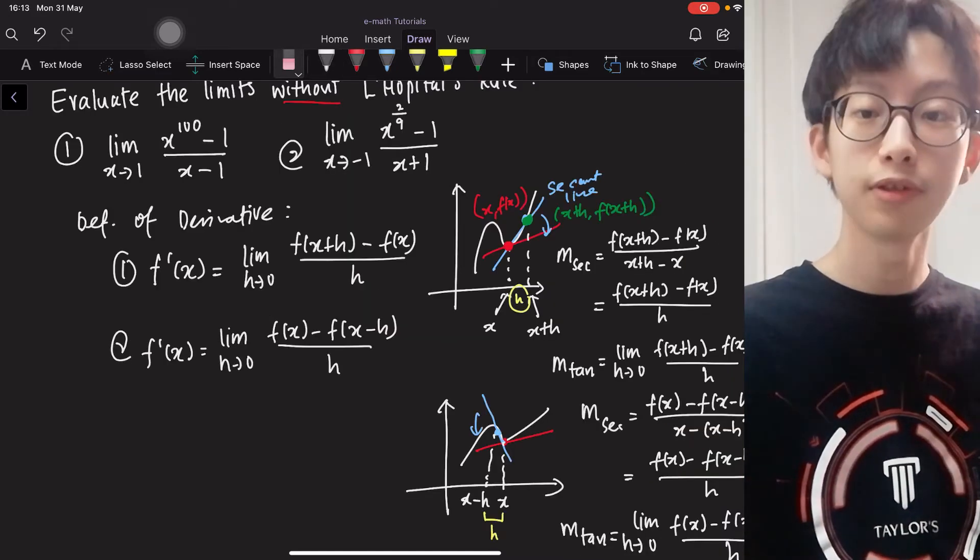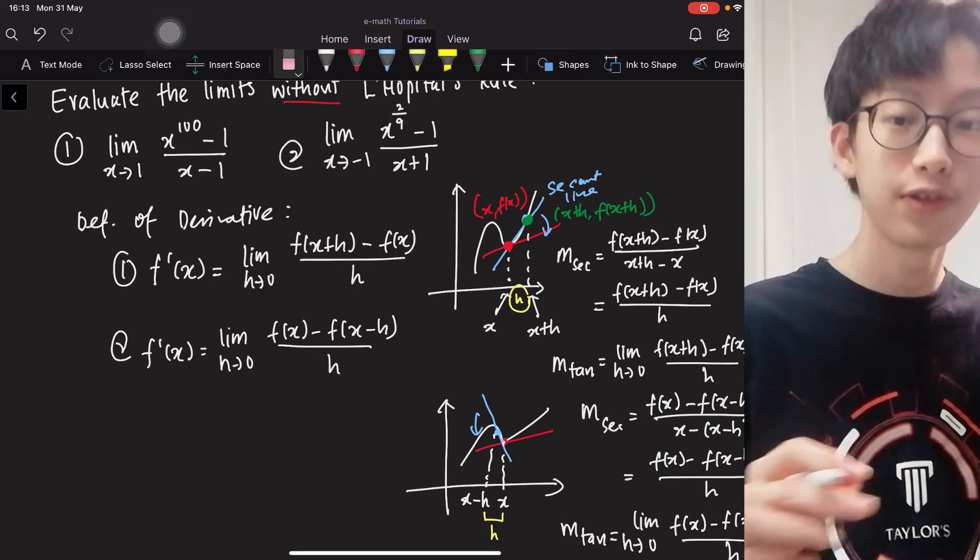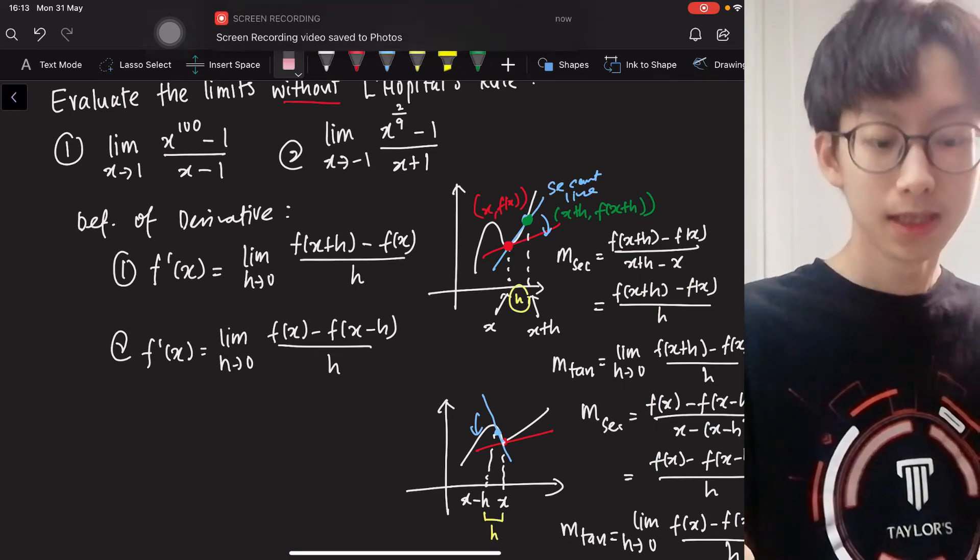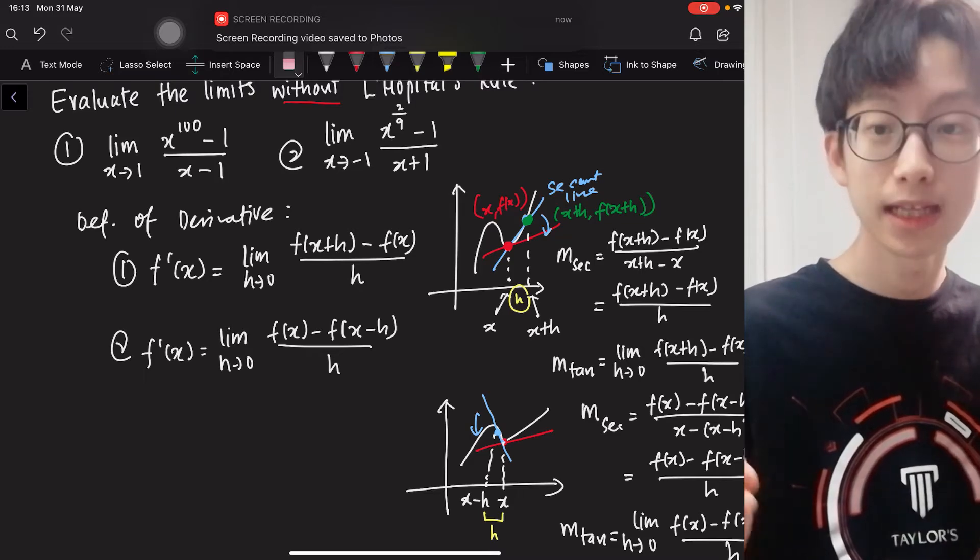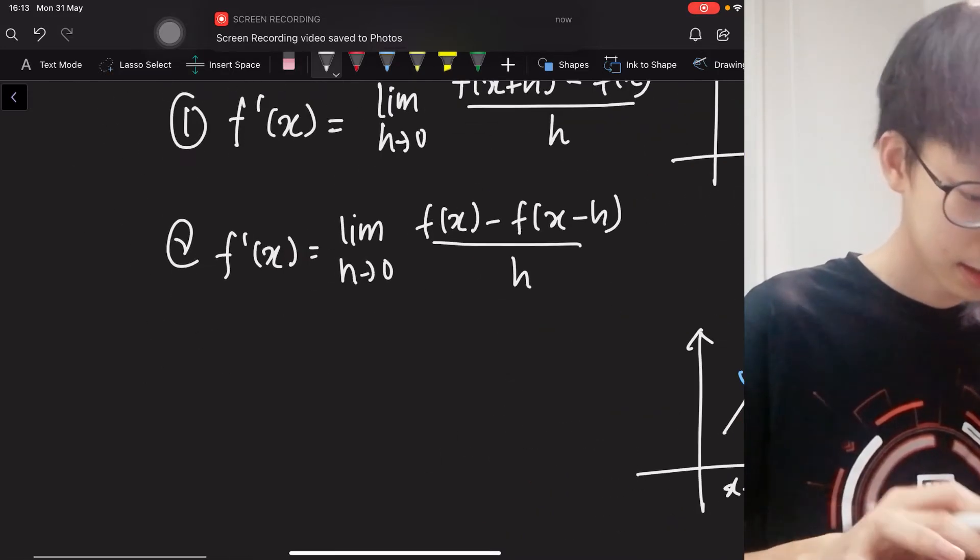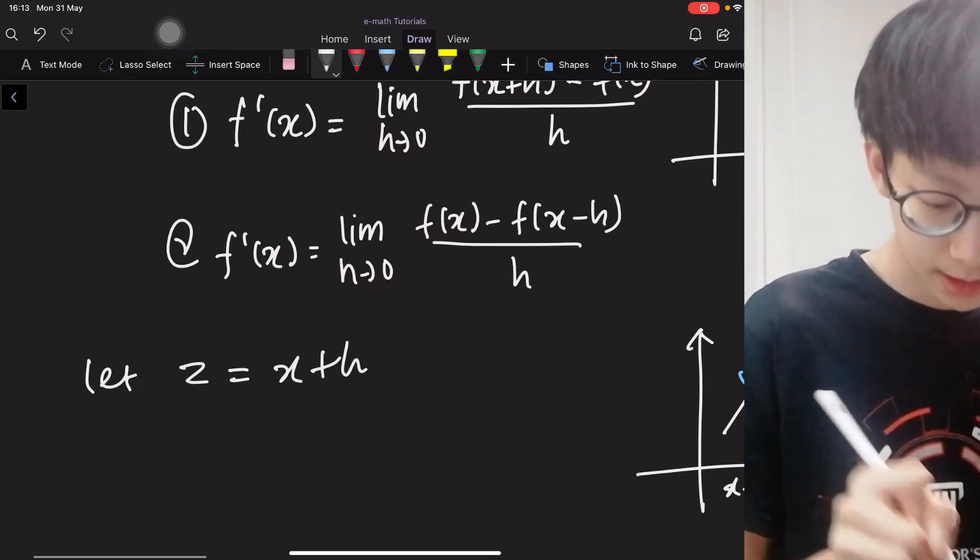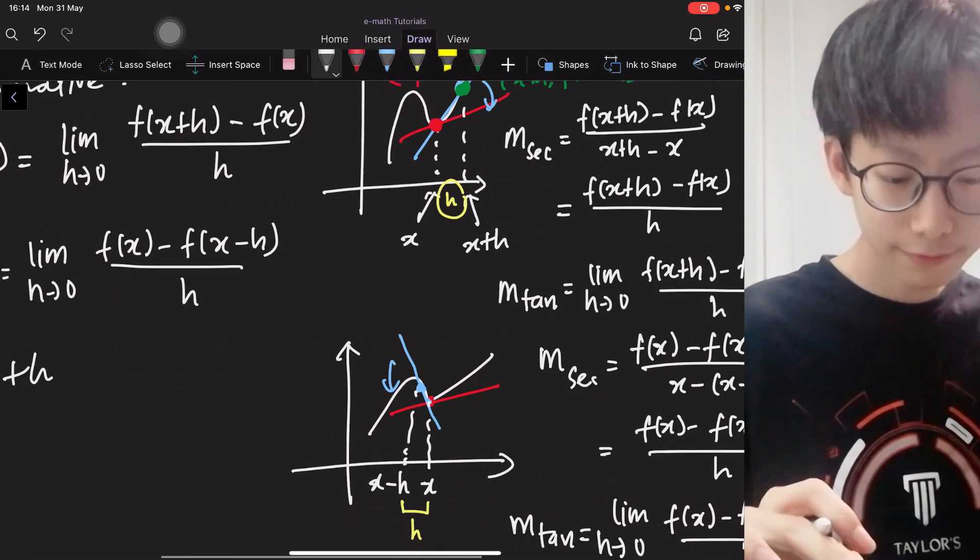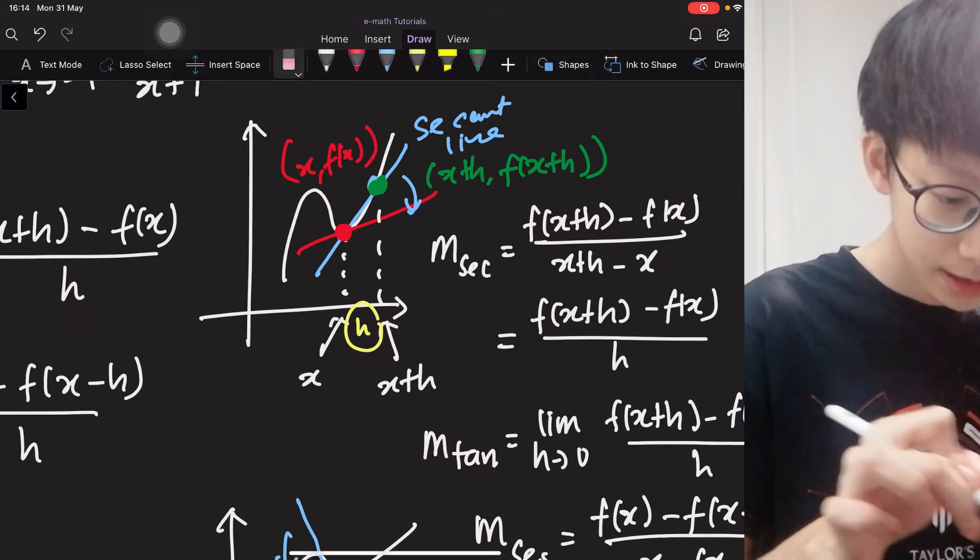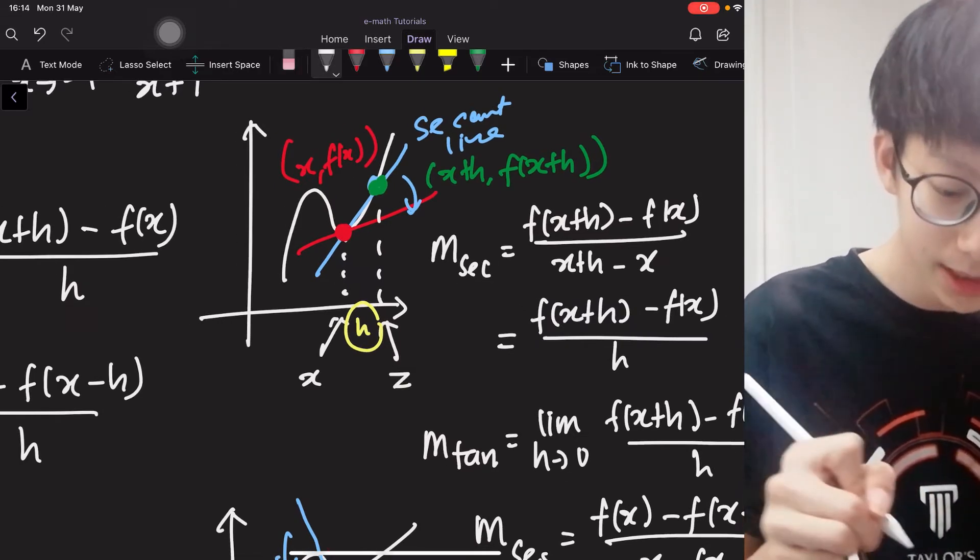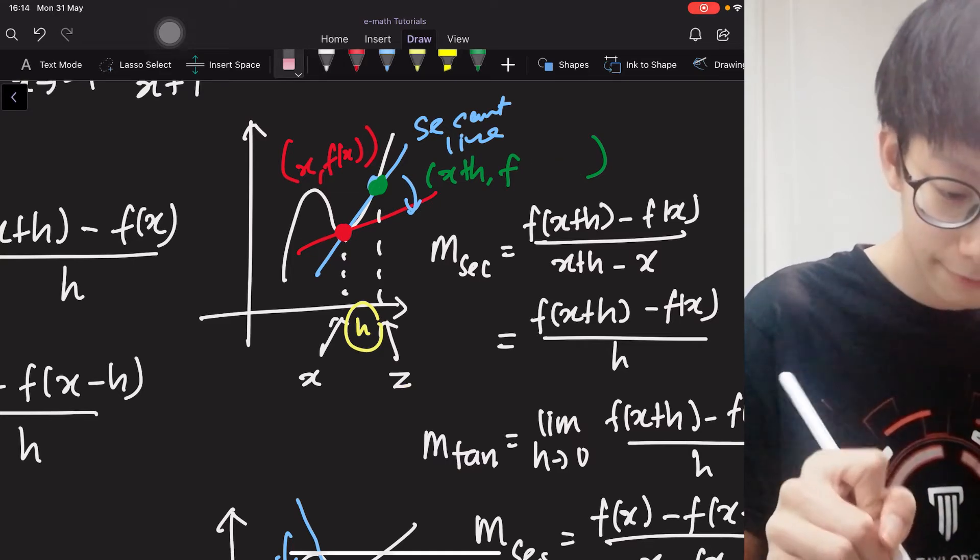Now I will introduce an alternative formula for the definition of derivative. So what I do is very simple, instead of writing x plus h, I will let z be x plus h, meaning for this graph, instead of letting this be x plus h, it is now z, and it is now f(z).